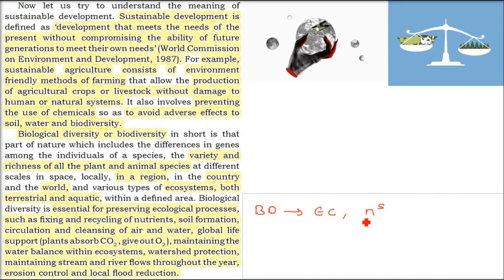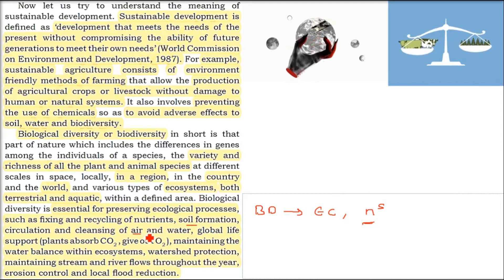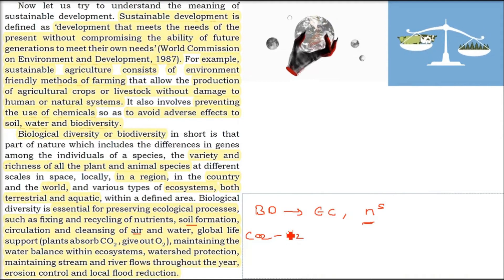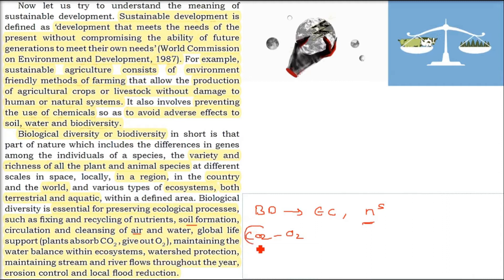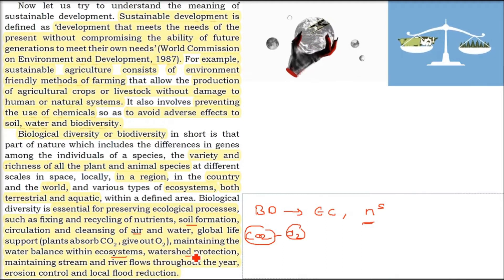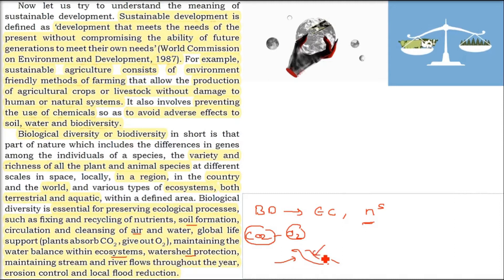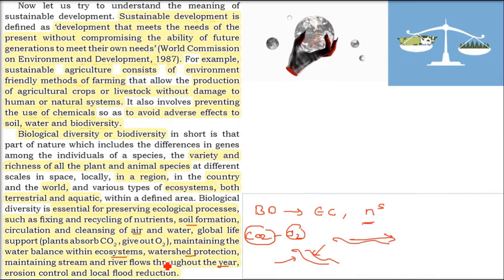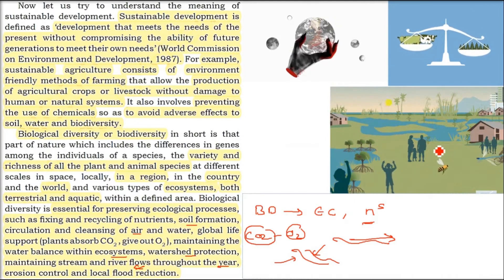This is essential for preserving our ecological processes — for example, nutrients. If you grow a crop, the nutrients of the soil will vanish, but preserving ecological processes will fix the nutrients. Soil formation is a long process. The circulation and cleansing of air and water is done by biodiversity. Global life support: carbon dioxide is released and we get oxygen from plants and trees. We need to protect water, keep streams flowing. Most perennial rivers have gone dry. We need erosion control, to keep the land intact, and avoid floods and famine.